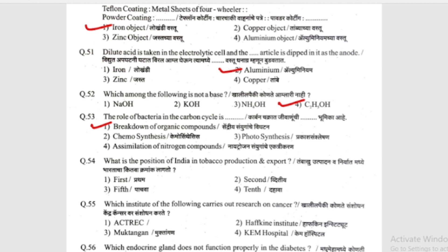What is the position of India in tobacco production and export? (Tambaku utpadan wo niriryat madhe bharatacha kituwa kramank ahe?) Options: 1st, 2nd, 3rd, or 10th.